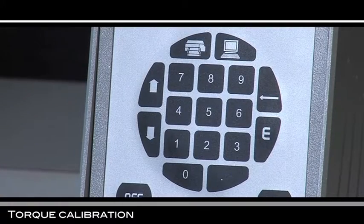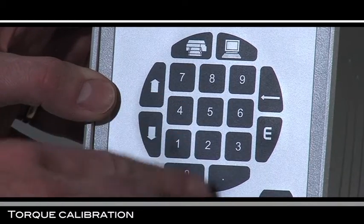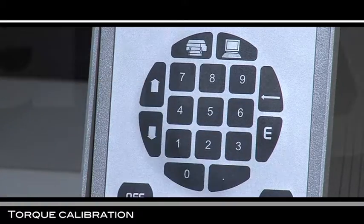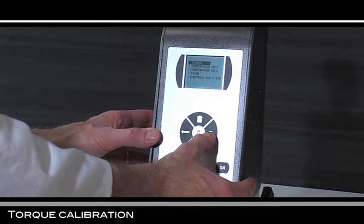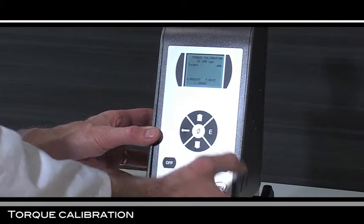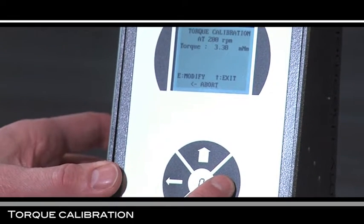For RM200 rheometer enter 8426. The viscometer displays the calibration menu. Select torque and validate with E. The viscometer turns at 200 rpm and displays a torque value.